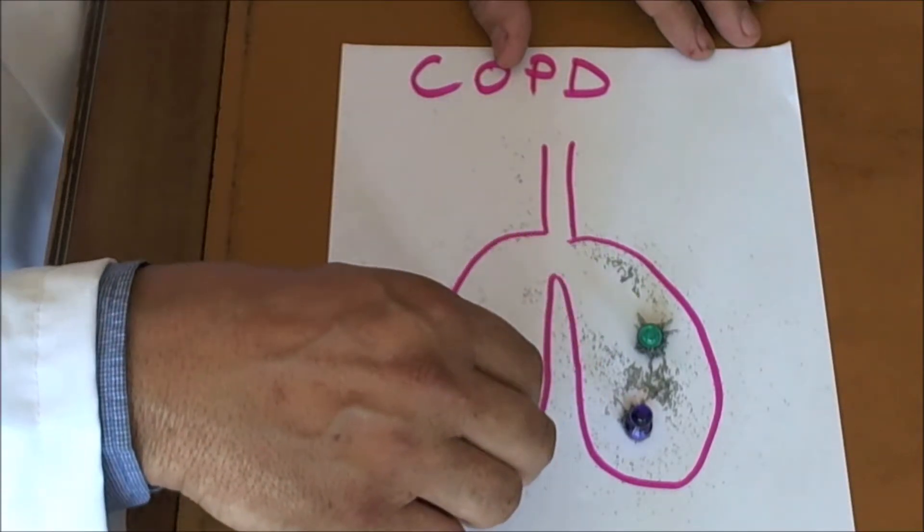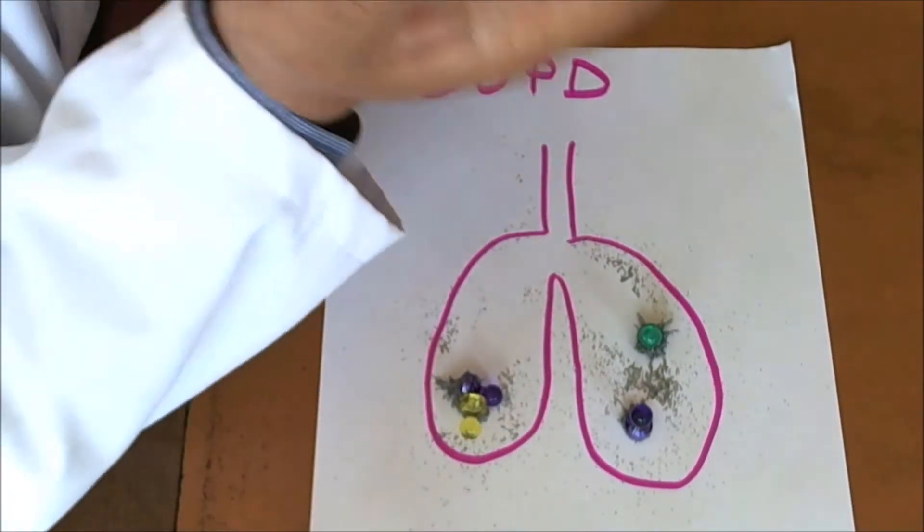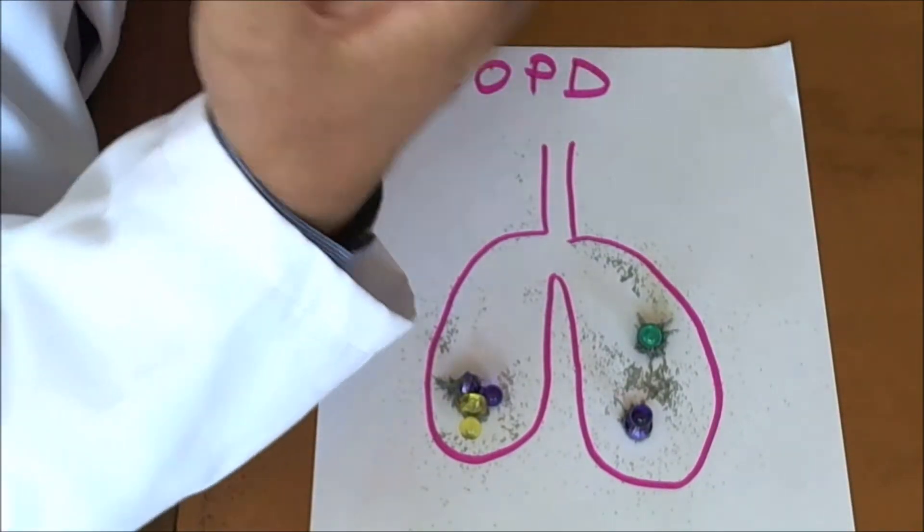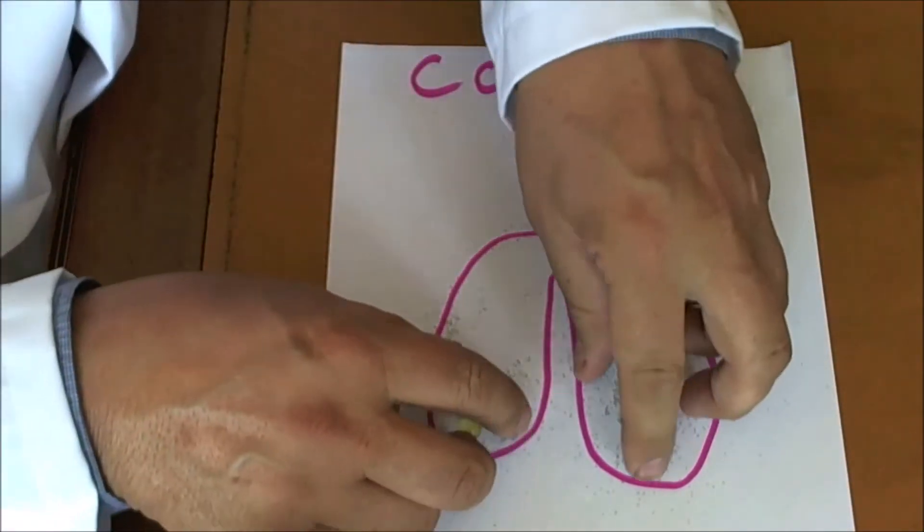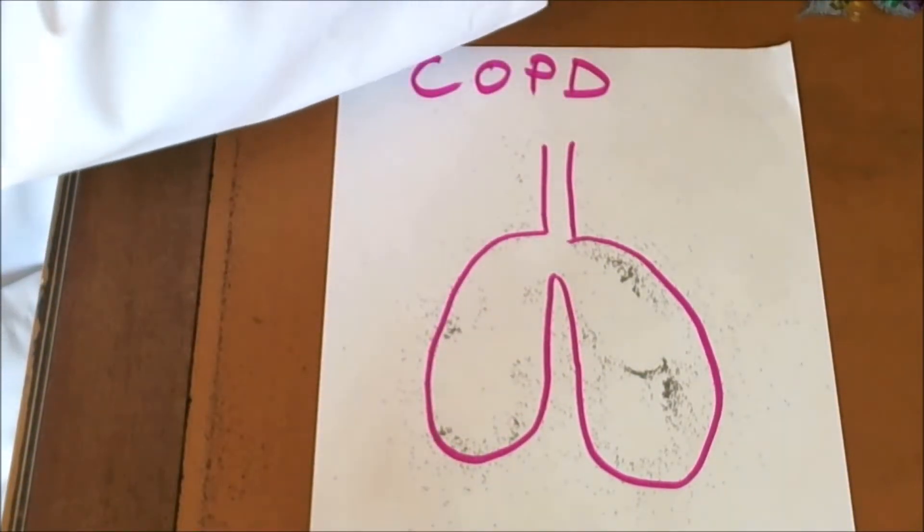So you breathe them into your lungs. As they kill off the parasites, you'll cough this loosened up phlegm and mucus out. Then you'll repeat the process again three times a day.